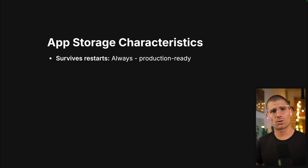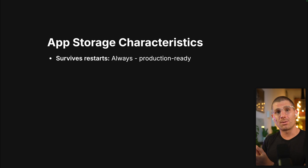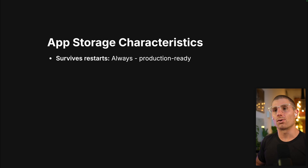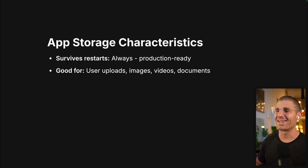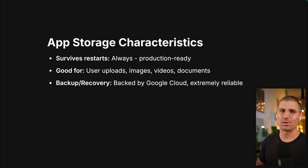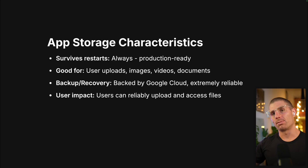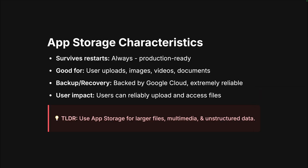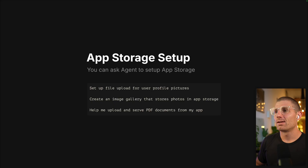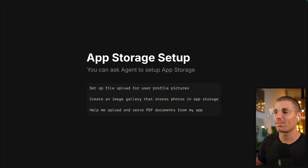App storage characteristics: it survives restarts — it's totally persistent. If you want users to be able to upload files or interact with dynamic data, you have to use something like app storage. It's production-ready because it's built on Google Cloud and is really great for user uploads, images, videos, and documents. Your data won't be lost. Users can reliably upload and then access the files they're creating. The TLDR: use app storage for larger files, multimedia, and unstructured data. If data has a different shape all the time, put it in app storage — and then process it into a database if you're transforming it into structured data.